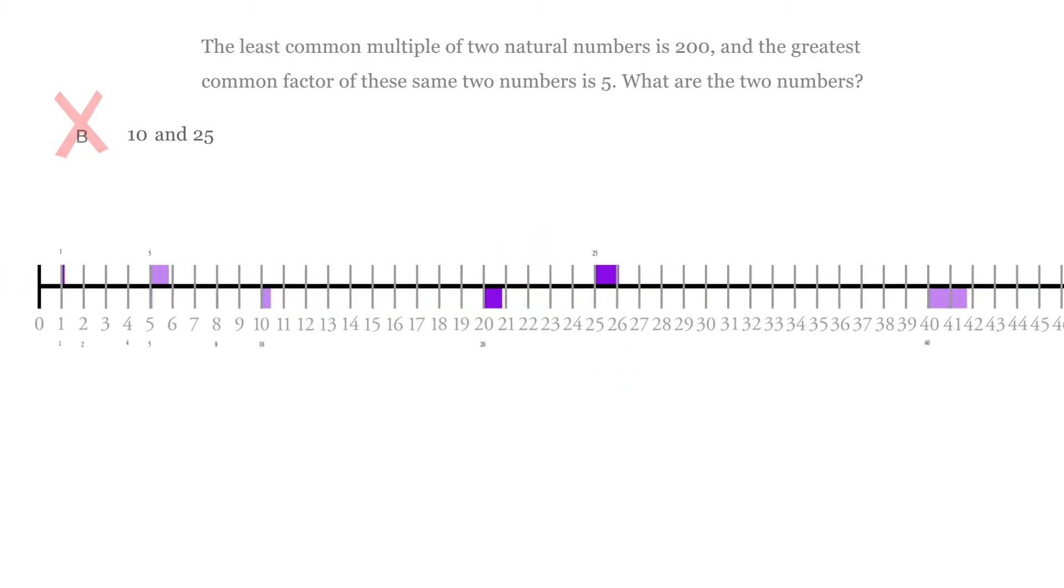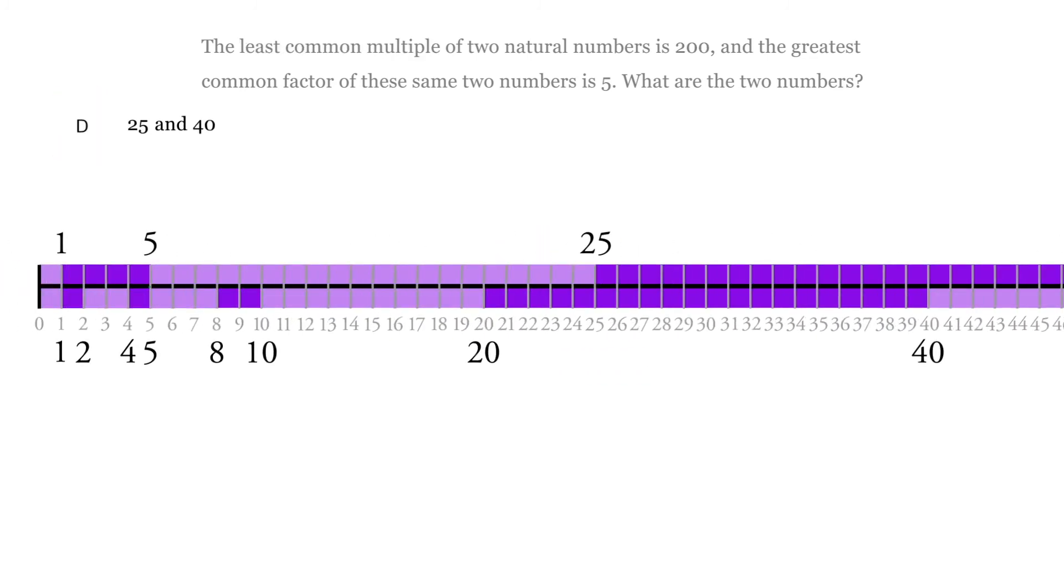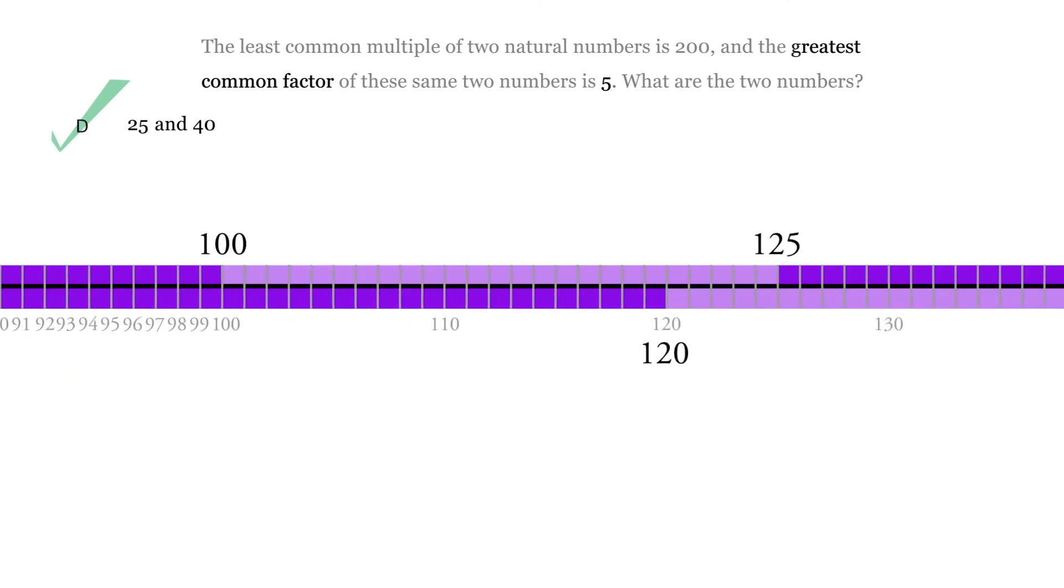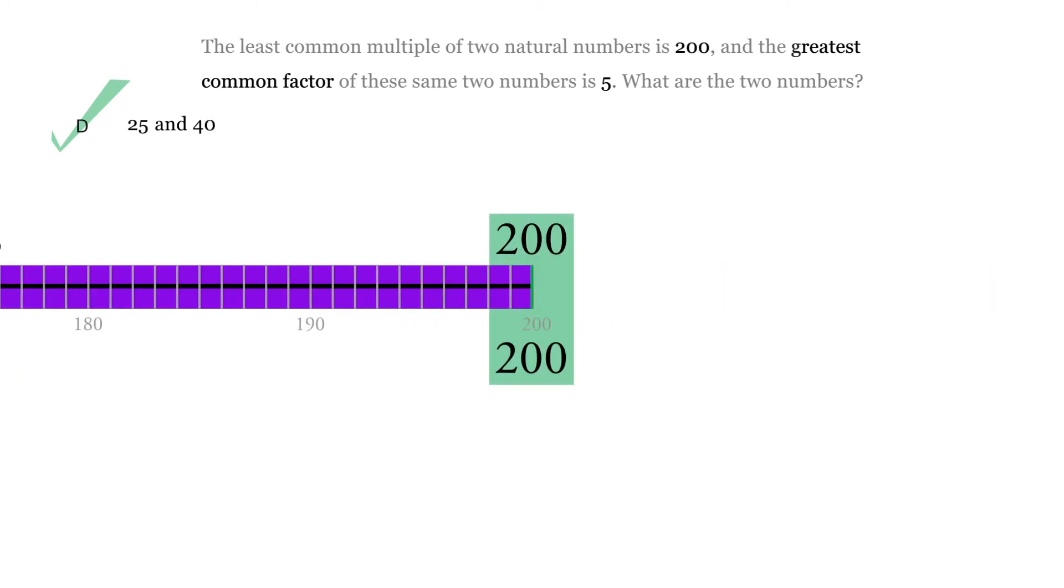So what we're left with is this one, where 5 is the greatest common factor that goes into both 25 and 40, and 200 is the least common multiple of 25 and 40.